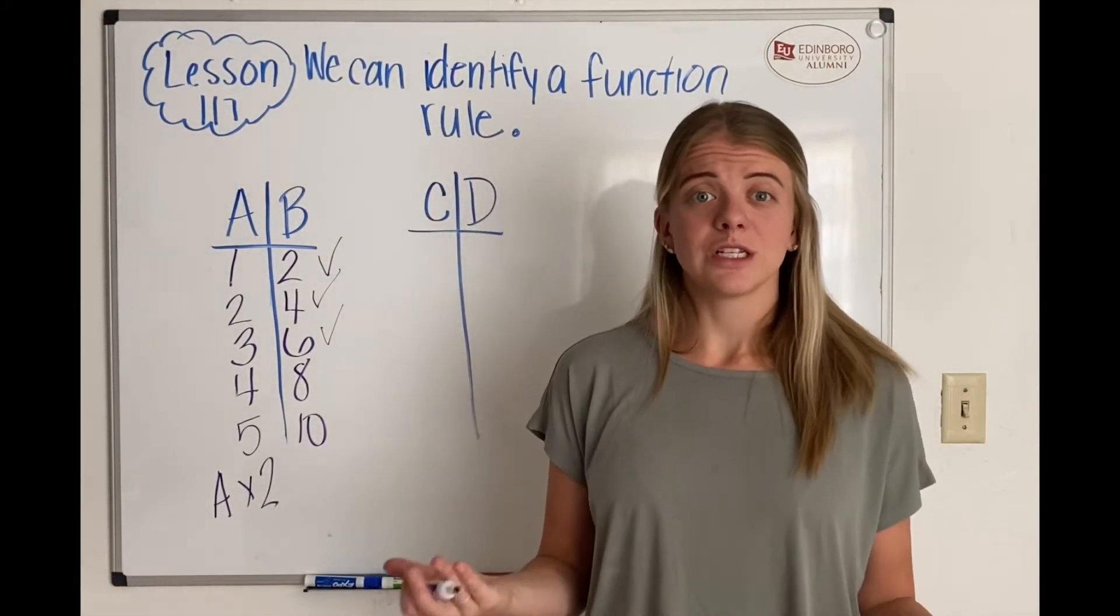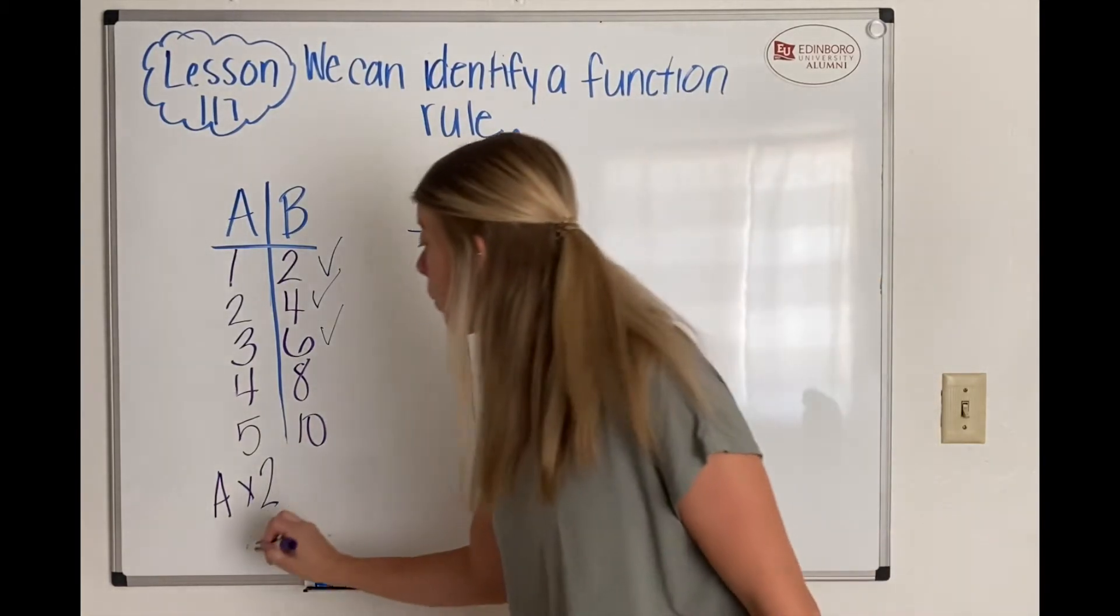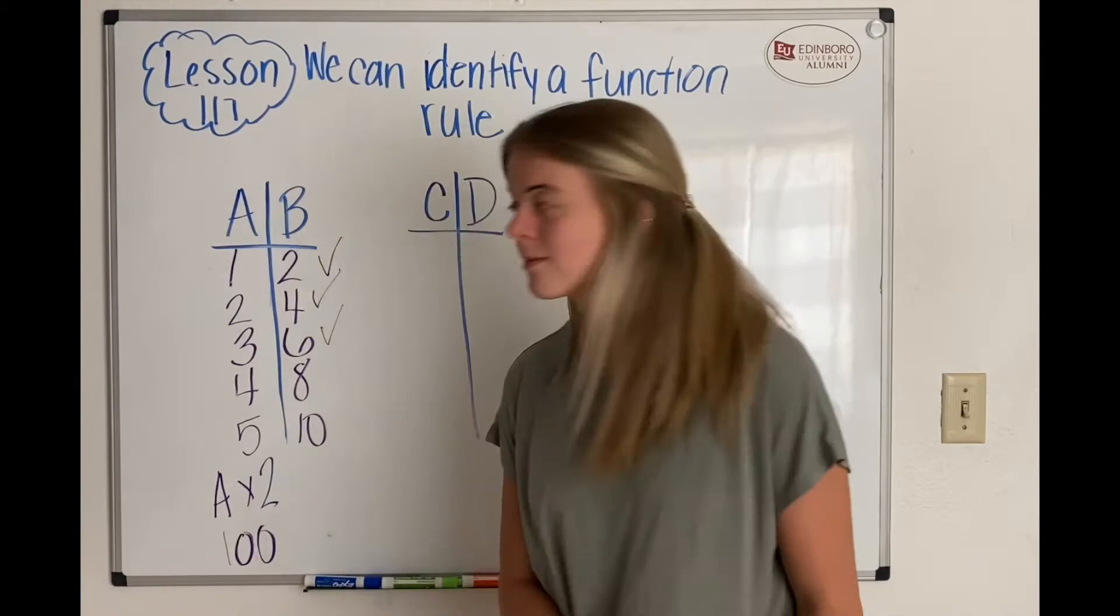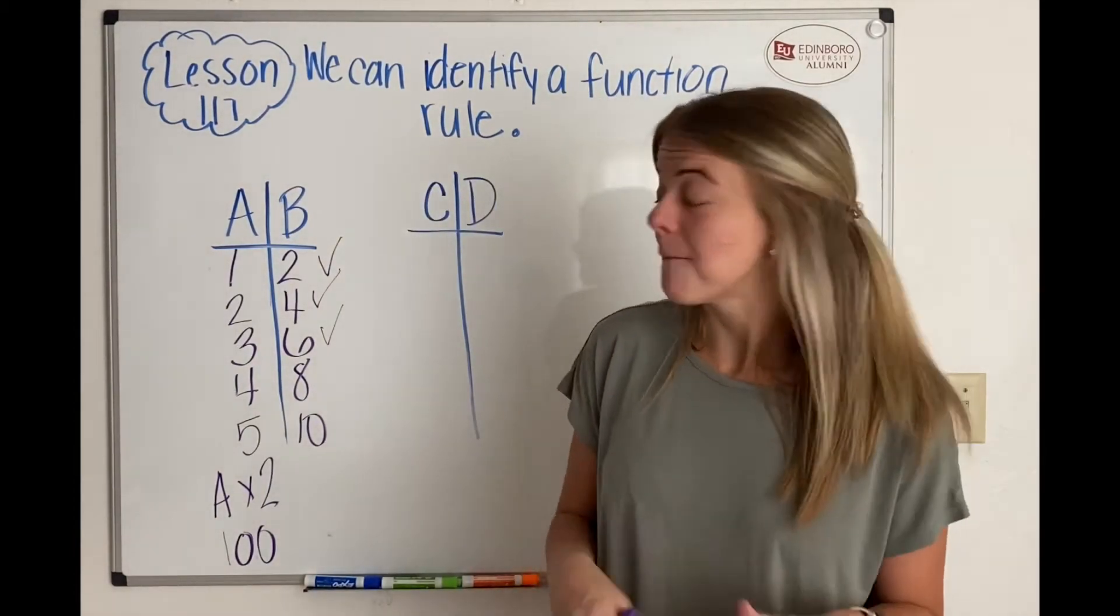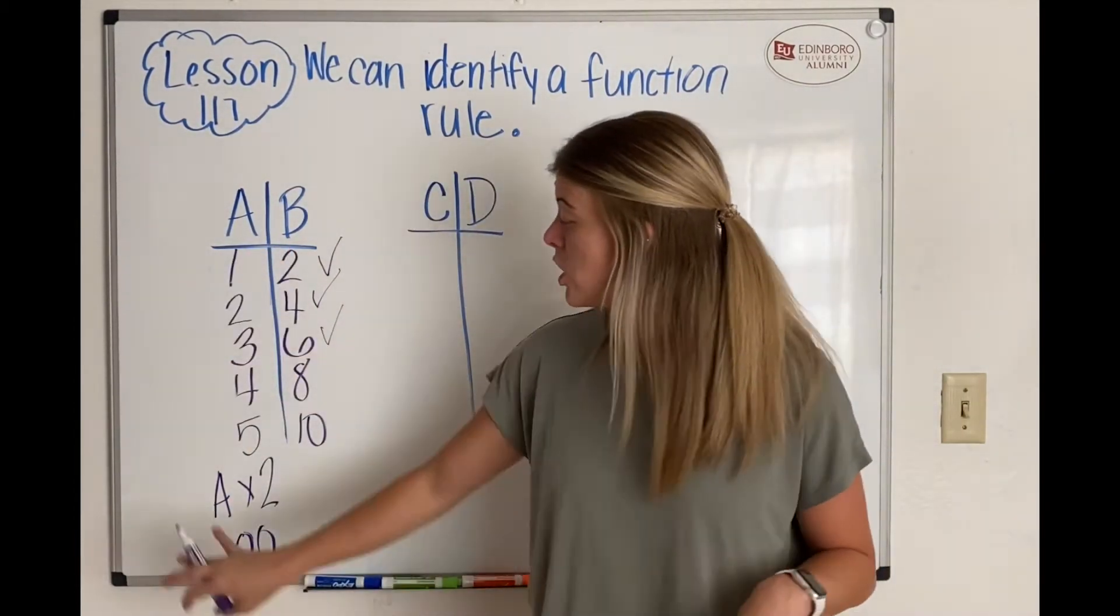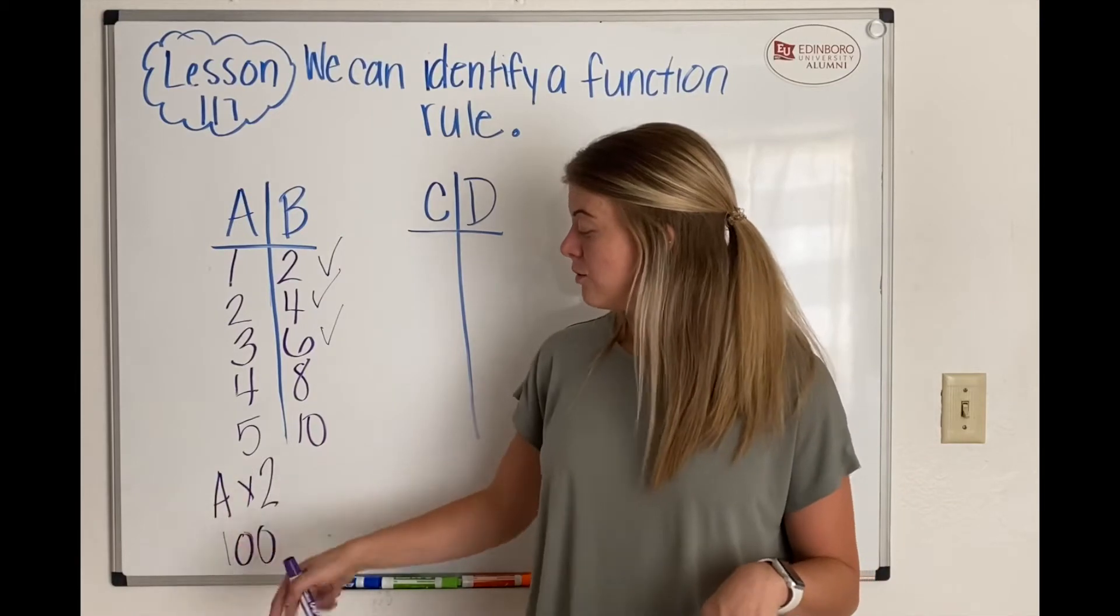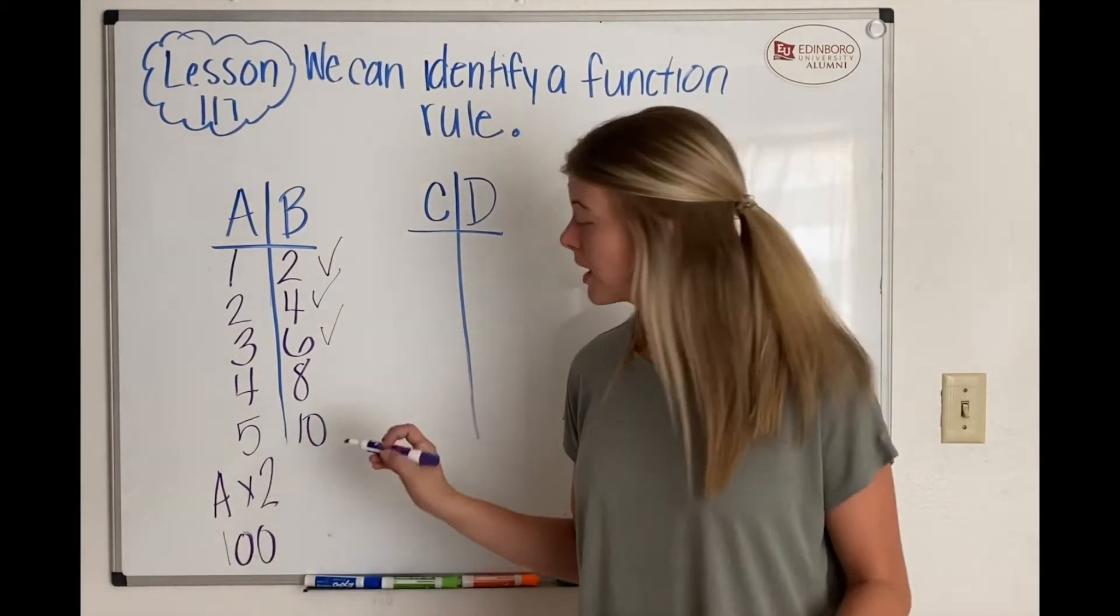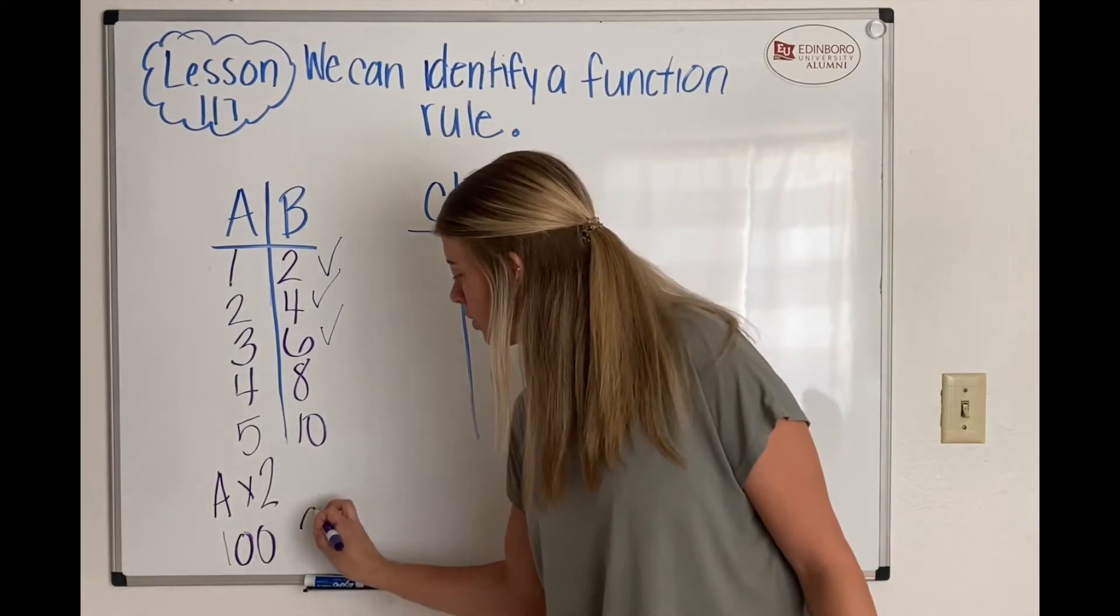Now let's say I were to give you some crazy number, like 100 down here. I still know that my rule is the same. So A times 2, which in this case would be 100 times 2, B would equal 200.